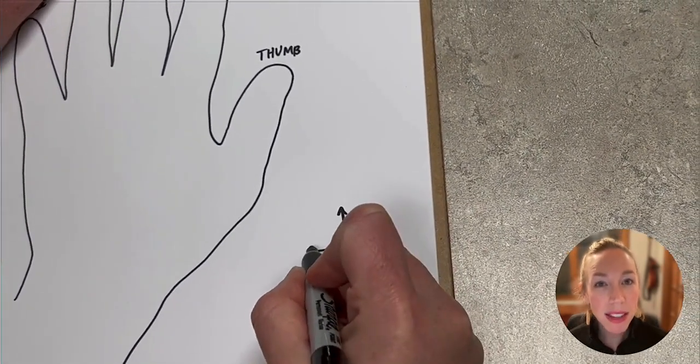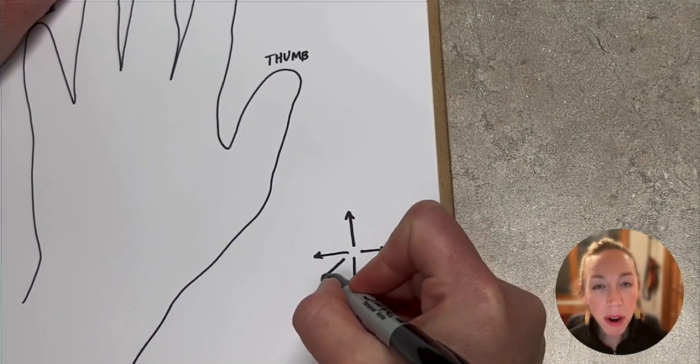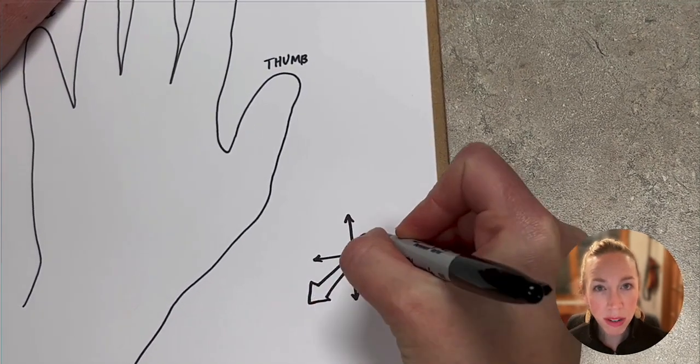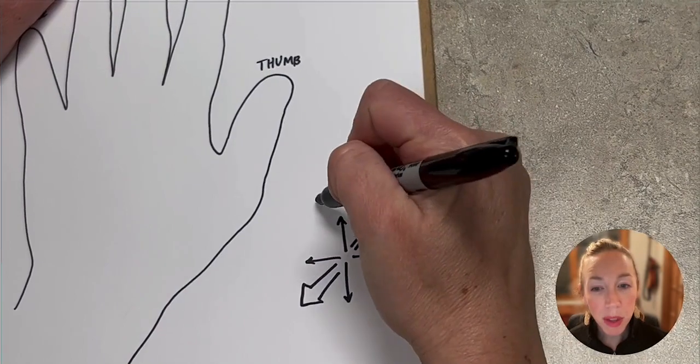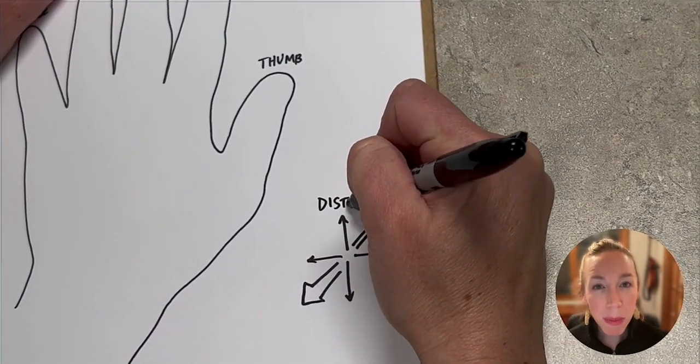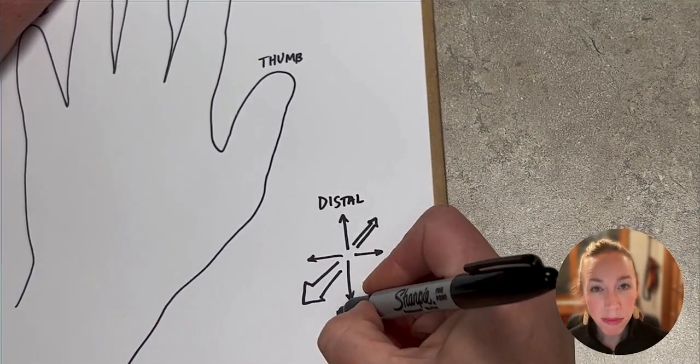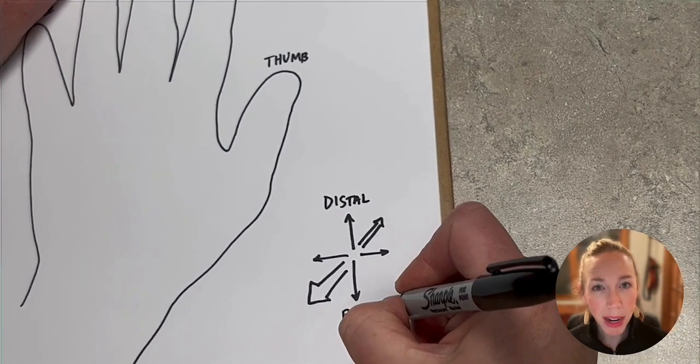North, south, east, and west. And another arrow in the southwest corner and one in the northeast corner. So further away from the center of the body, we use distal and closer to the center of the body, proximal.